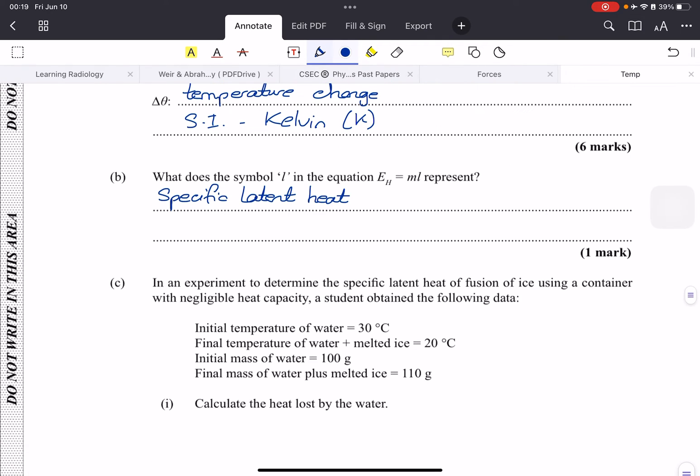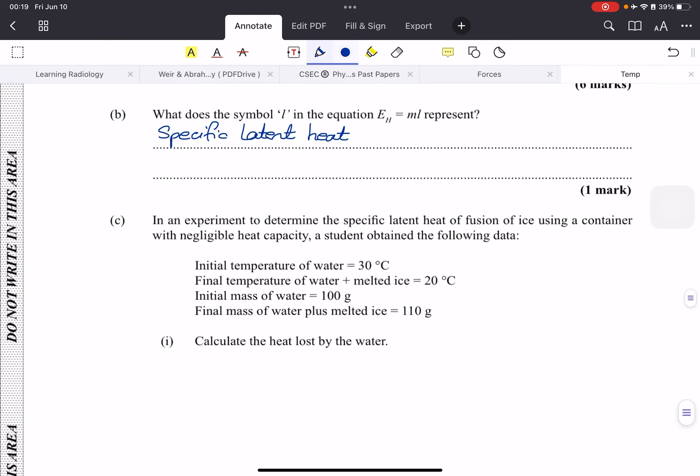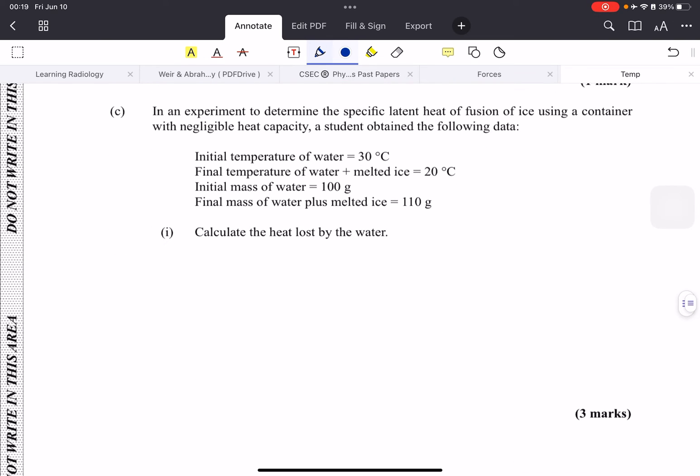The symbol L in the latent heat formula is obviously the specific latent heat. Here is a calculation in an experiment to determine the specific latent heat of fusion. We have some findings here after they poured melted ice, which is very cool. We don't have an initial temperature of the melted ice. After they poured the cold water into the warm water, they got a new temperature of 20 degrees Celsius. This was the initial temperature, the room temperature of water.